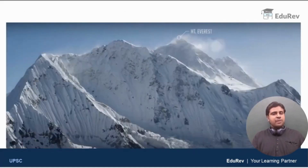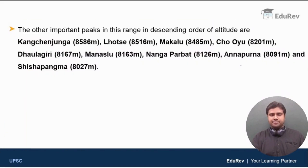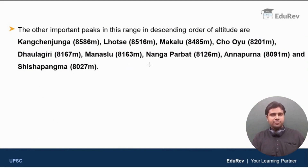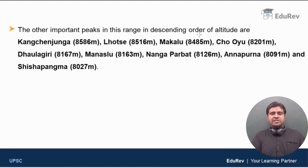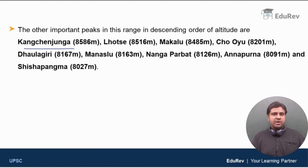This is Mount Everest from the base camp. Now, the other important peaks in this range, in descending order of altitude — from big to small — are Mount Kangchenjunga, which is the third highest mountain in the world.